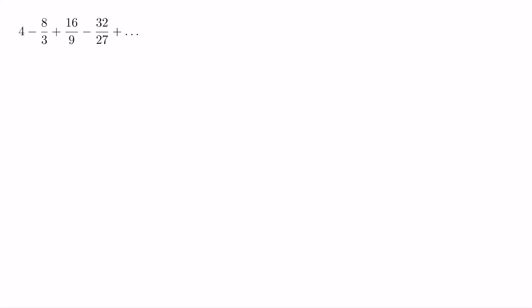Let's look at this first series here. To show that this is indeed a geometric series, we need to find the common ratio. A common ratio is a constant that we multiply to a term to get the next term. So what do we multiply by 4 to get the next term, which is negative 8 thirds? In this case, we multiply by negative 2 over 3.